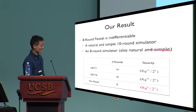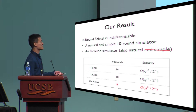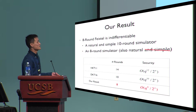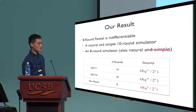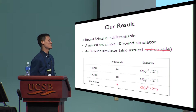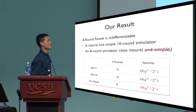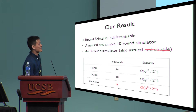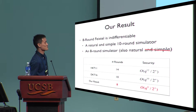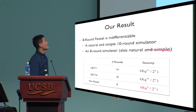This is the comparison of our results. We achieve slightly better security than the previous work, but it still represents a very large advantage for the distinguisher, so it is not a very good bound. Q is the number of queries of the distinguisher and N is the word length.